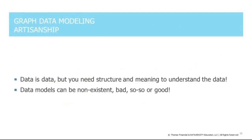The next part is about artisanship. We already saw that we care about normalization structures, identity and uniqueness, and so on. But who would really need to care for data models in detail as before? My take is that data is data, but to understand data you need to understand the structure and meaning. Data models can be non-existent, bad, so-so, or good. What makes a good data model? That's what we're going to look at.